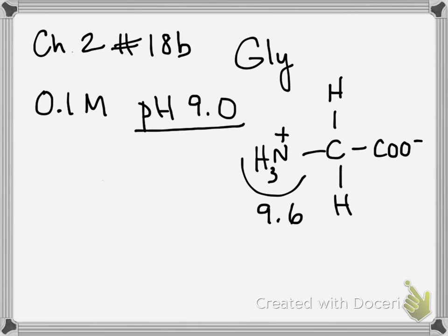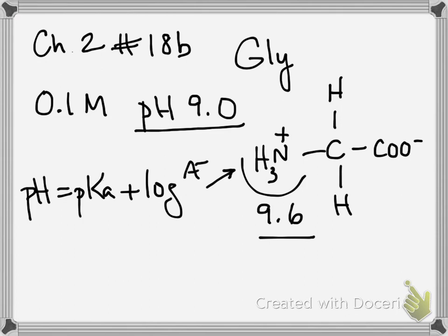You're told that the pH of your solution is 9.0, so you can use that information with the pKa to figure out the fraction of the amino group. So pH equals pKa plus log of A minus over HA.